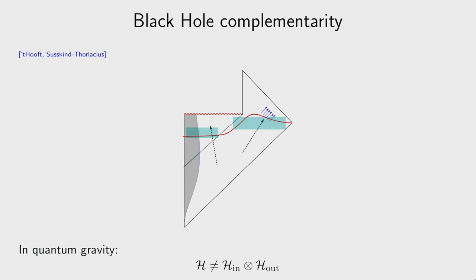The more precise statement is: contrary to what effective field theory suggests — that space-like separated regions have factorized Hilbert spaces — in quantum gravity this factorization may fail. The interior Hilbert space should somehow be encoded in a scrambled form in the exterior Hilbert space. However, there are two problems: first, it's not mathematically precise, and second, identifying the two Hilbert spaces risks violating effective field theory by allowing superluminal communication.